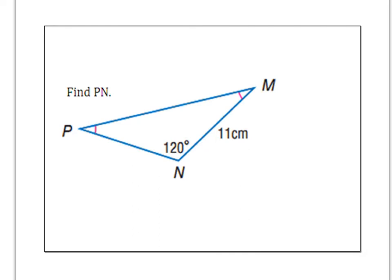So this one says find PN, which means the distance from P to N. We're looking for this distance over here highlighted in red. What I've noticed is that angle P and angle M have little red curves. And if I go across from angle P, I get to this side MN. And if I go across from this red curve, I get to side PM, which means these two sides must be the same length. So 11 centimeters is your answer.